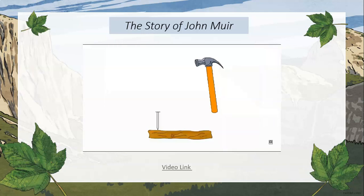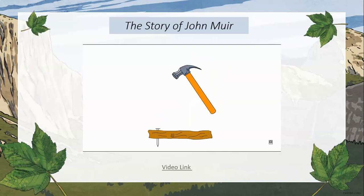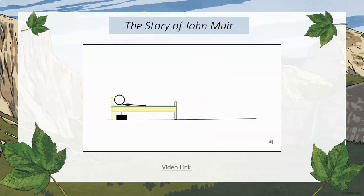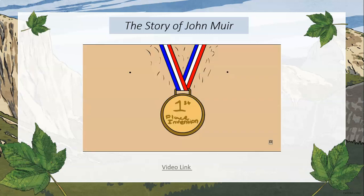Eventually John started inventing things — some being accurate clocks and some being wondrous devices, one example being a device that tipped him out of bed before dawn. In 1860, at the State Fair in Madison, Wisconsin, John took his inventions and won admiration and prizes.